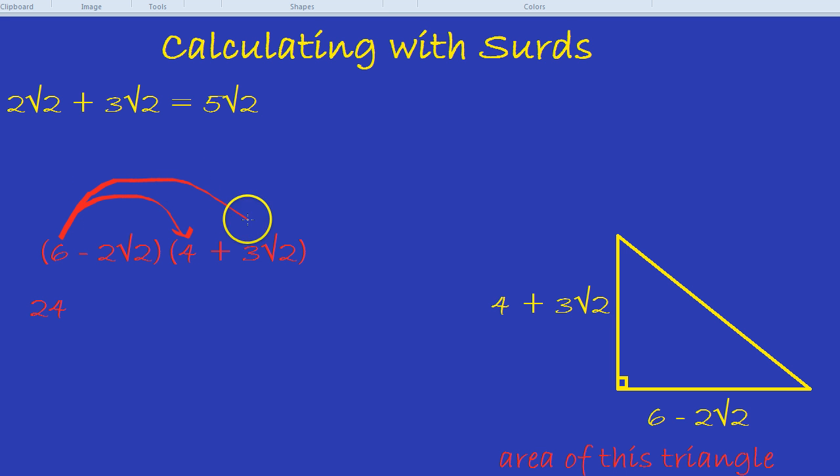Front times back. So we've done front times front, now front times back. 6 times by 3 root 2. What do you reckon 6 times by 3 root 2 is? That would be 18 root 2. We've got 3 root 2. We've got 6 of those 3 root 2s. So we have 18 of those root 2s.